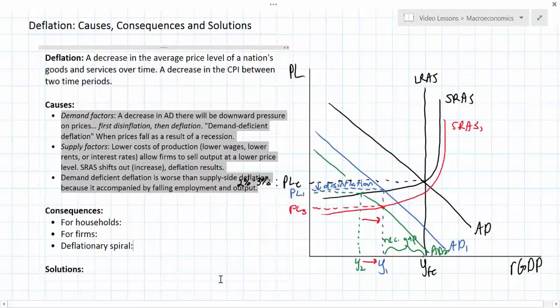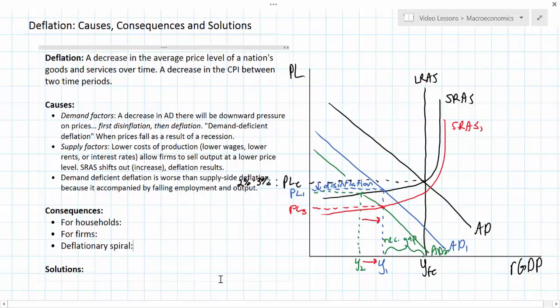We've identified two causes of deflation. Either decreases in aggregate demand or increases in aggregate supply can cause a nation to go from experiencing a healthy inflation rate of between 2 and 3 percent to either disinflation in the short run or deflation in the long run.